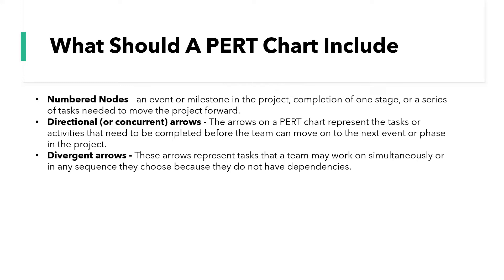So what should they include? Firstly, we need nodes, and they should be numbered. These are events or milestones which are required for the completion of a project, broken down into the different components that move the project forward. We also need directional or even concurrent arrows, which represent the tasks and activities that need to be completed. You may also need to introduce divergent arrows, which represent tasks that a team may work on simultaneously in any sequence that do not have dependencies.